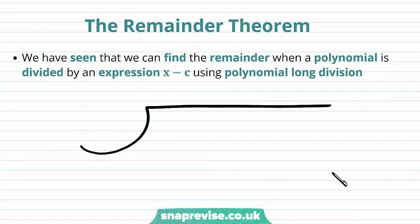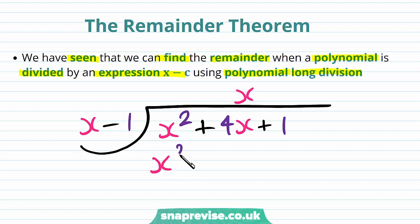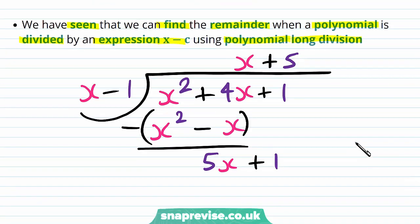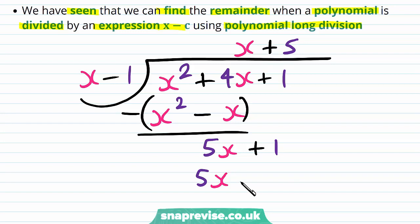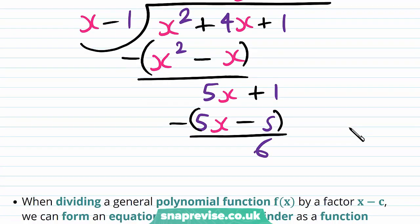So what exactly is the remainder theorem? We've seen that we can find the remainder when a polynomial is divided by an expression x - c by using polynomial long division. For example, dividing x² + 4x + 1 by x - 1: we divide x² by x to get x, multiply to get x² - x, subtract to get 5x, bring down the +1, divide 5x by x to get +5, multiply to get 5x - 5, subtract and we get 6. Therefore the remainder when doing this division is 6.